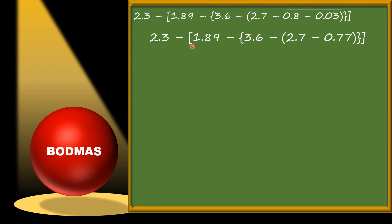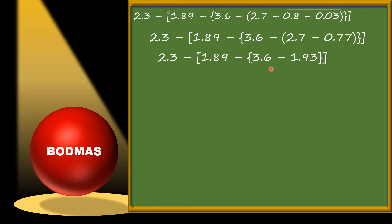The result of 0.8 minus 0.03 is computed and the rest of the things remain as they are. Then we solve the curly bracket: 3.6 minus 1.93, and we get 1.67.